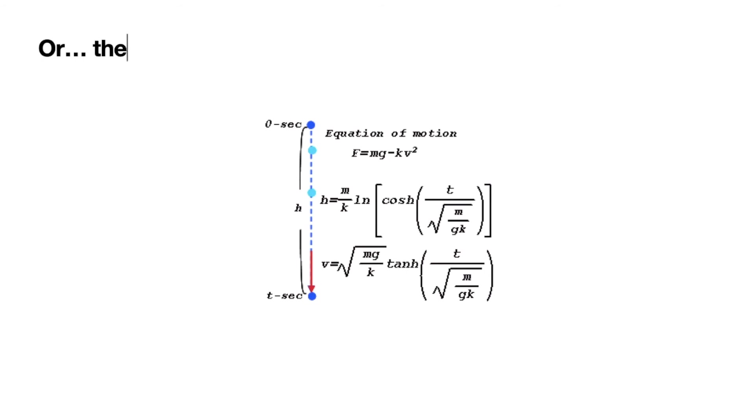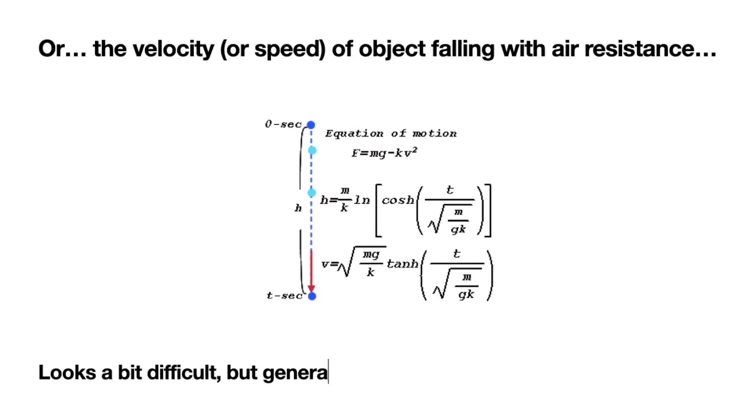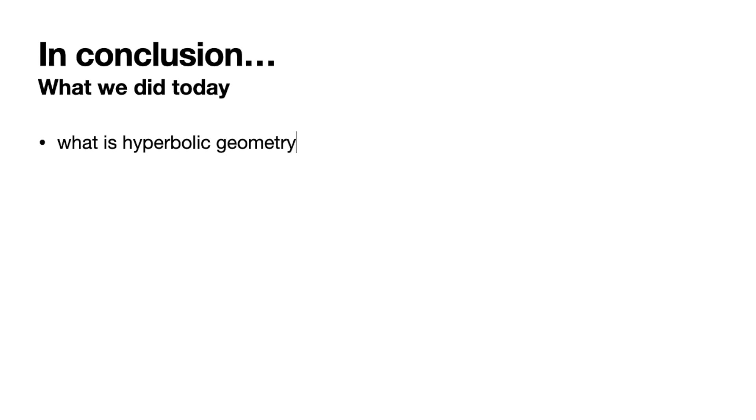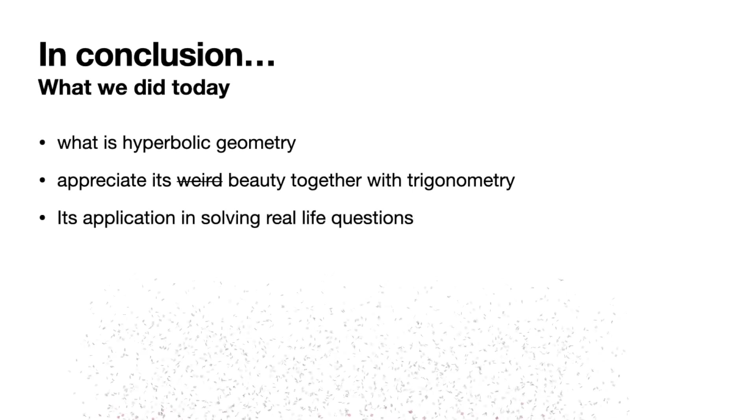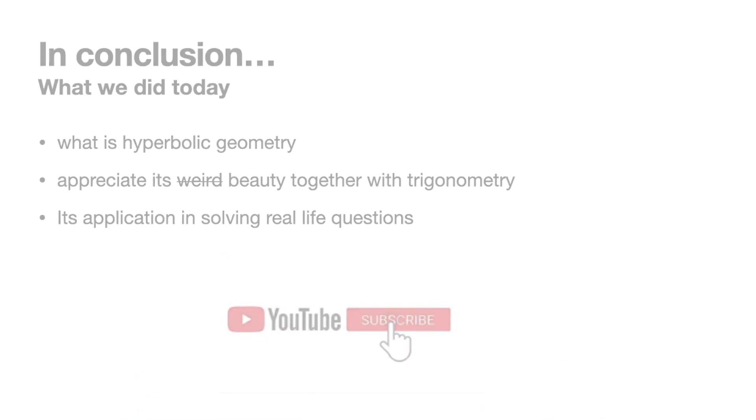This concept is also helpful when explaining the cost of velocity when decreasing with air resistance as shown here. So today we have seen hyperbolic geometry - what it is, appreciate its weirdness and the weirdness of the trigonometry that comes along with it, and see how it is applicable in finding the shape of a hung cable as well as different velocity cases.